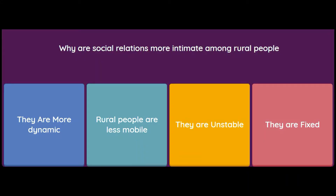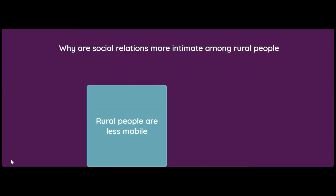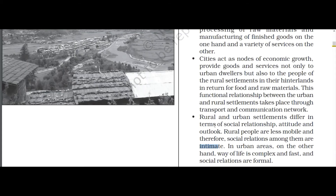Why are social relations more intimate among rural people? Because they are more dynamic, because rural people are less mobile, they are unstable, or they are fixed? The answer is: because rural people are less mobile. The book states that rural and urban settlements differ in terms of social relationships, attitude, and outlook. Rural people are less mobile, so social relations among them are intimate. In urban areas, life is complex and fast, and social relations are formal.